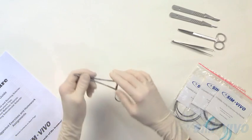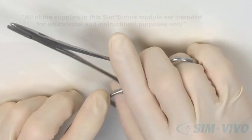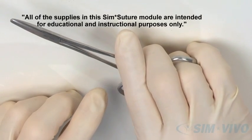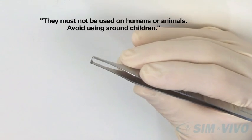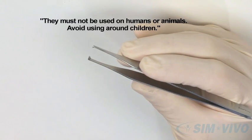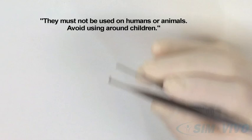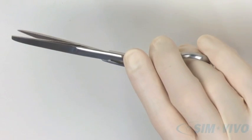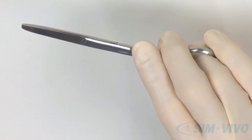This is a Hager needle holder. This is a pair of Atsin forceps. This is a pair of straight suture scissors for cutting sutures.